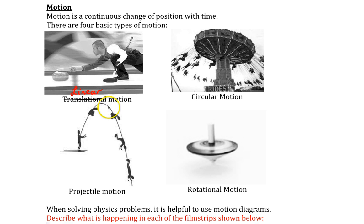And when an object follows a nice curved path like this parabola shape, this is called projectile motion. This path here is called a trajectory. And when an object is revolving around some sort of axis, we call that rotational motion.